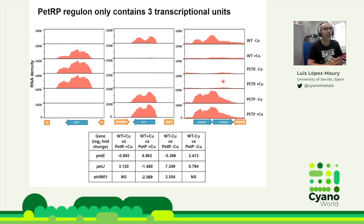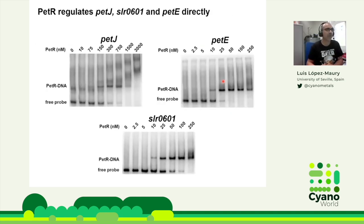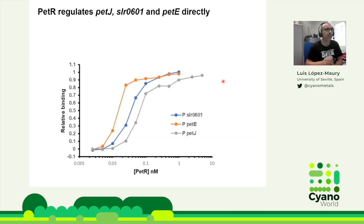We had a transcriptional factor and a protease, but we didn't know if the regulation was direct — it was possible that a small RNA, an antisense RNA, or another regulatory mechanism was involved. To prove direct regulation, we carried out EMSA assays with all three promoters identified in the transcriptomics, and the PETR protein was able to bind directly to all three promoters, although with quite different affinities.